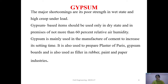Gypsum is mainly used in the manufacture of cement to increase the setting time of cement. It is also used to prepare plaster of Paris, gypsum boards, and is also used as a filler in rubber, paint, and paper industries.